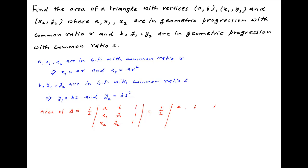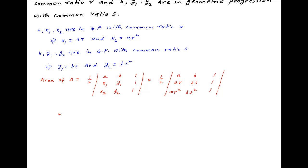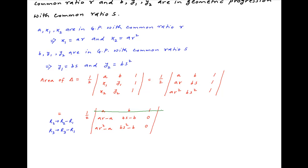Substituting the values of x1, x2, y1 and y2 obtained above, and then applying a couple of row operations — replacing the second row with the difference between the second row and the first row, and the third row being replaced with the difference of the third row and the first row. Therefore, the area of the triangle is equal to half of the determinant. The first row remains the same. The second row becomes ar minus a, bs minus b, and 0. And the third row becomes ar squared minus a, bs squared minus b, and 0.